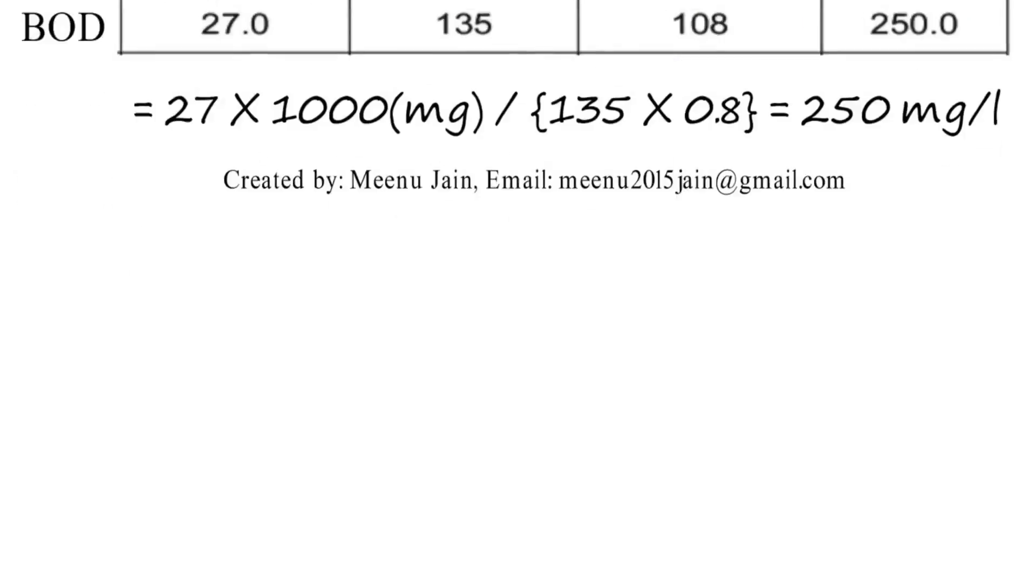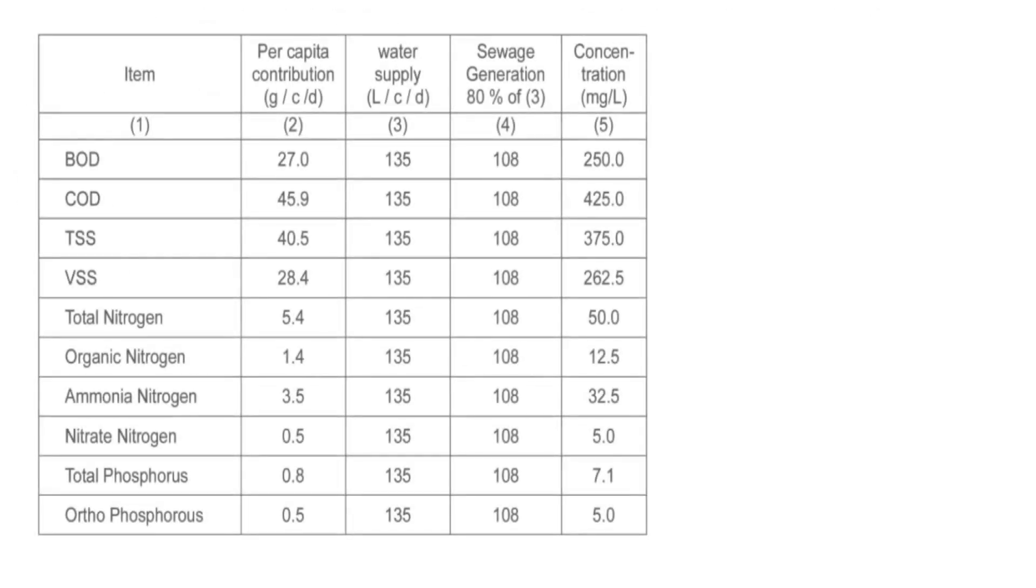In the similar way, we can find out the concentration of all parameters in sewage. Like for BOD, 27 multiplied by 1000 divided by 135 multiplied by 0.8 is 250 mg per litre.